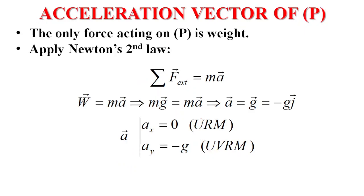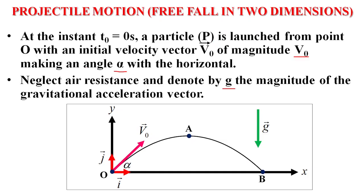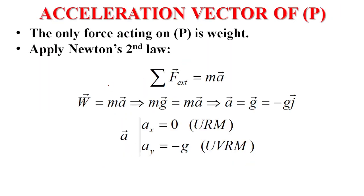Step two: we find the acceleration vector of the projectile. A freely falling object is an object moving under the action of one external force, which is weight. The only force acting on P is weight — we neglect friction or air resistance.